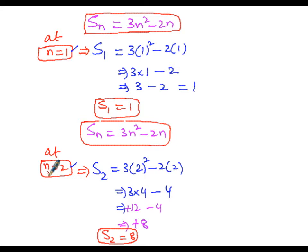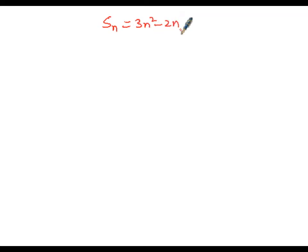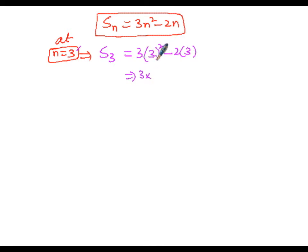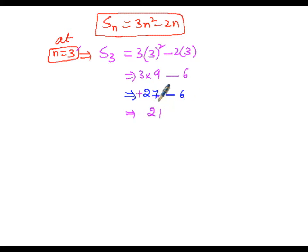In the third case, at n equals 3, S(3) equals 3 into 3 squared minus 2 into 3, which gives 3 into 9 minus 6, that is 27 minus 6 equals 21. So S(3) equals 21.